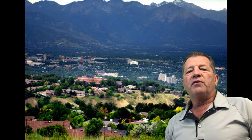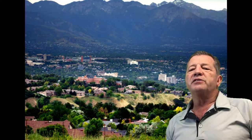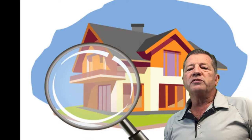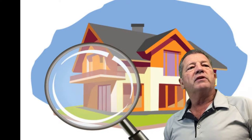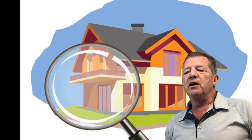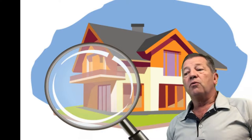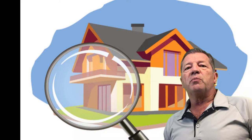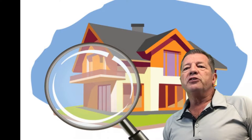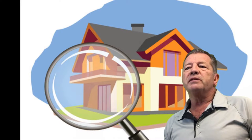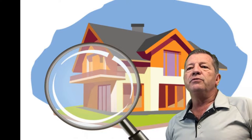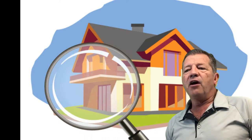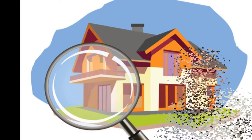However, the appraiser fails to provide the supporting commentary to support those opinions that are developed. For instance, if a property backs onto a golf course, a freeway, or an industrial property, there should be some comments describing the view, the neighborhood, and the characteristics — and often those things are omitted.